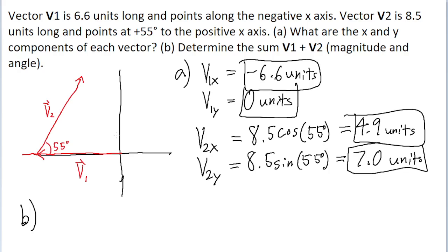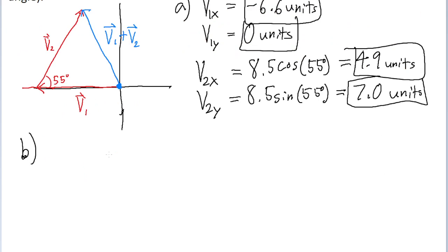Part B asks us to find the sum of the two vectors. In other words, we're looking for the resultant vector that comes from the tail of the first vector and ends at the head of the final vector. This blue vector I've drawn is v1 plus v2. To find the sum, we need to add up the components of the vectors. I'm going to have a component table here.